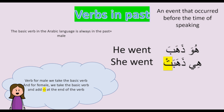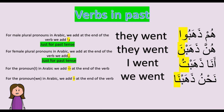How do we say 'she went' in Arabic? We use هي, which refers to 'she' in English. So: هي ذهبت. Here we use the basic verb but we add the silent ta (ت) at the end of the verb to refer to female. Silent ta refers to female — هي ذهبت.